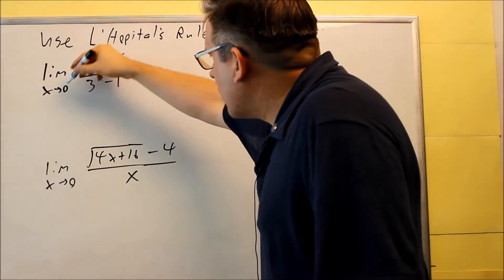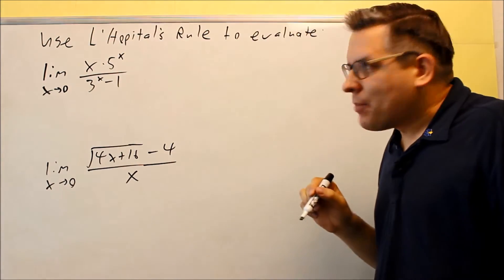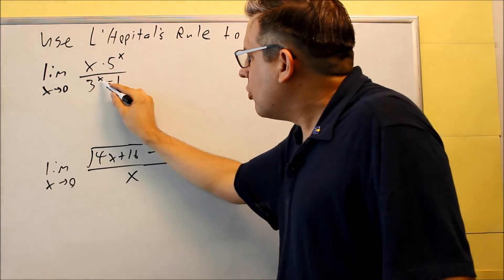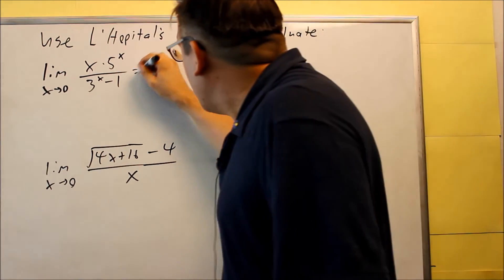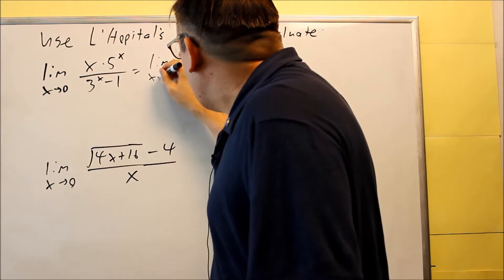For the top part, let's put in 0, and you get 0. If you put 0 in the bottom, you get 1 minus 1, that's 0. Therefore we know that L'Hôpital's Rule can be applied.